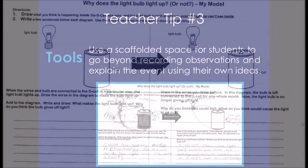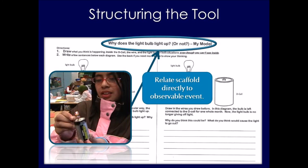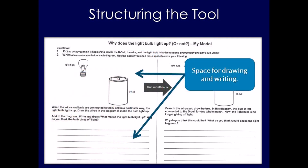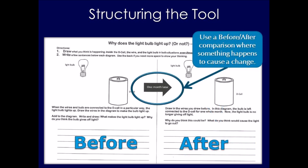Let's briefly unpack the important parts of this writing scaffold. First, it directly relates to an observable activity students were engaged with. Next, there is space for both drawing and writing—lines cue students that writing is expected. Partially started drawings allow students to spend time thinking and writing rather than laboring over drawing the perfect light bulb. Finally, setting up a before-and-after scenario gives students a contrast and cause-and-effect relationship to consider: a working flashlight before being left on, and after 30 days it no longer functions—what caused the change and how did it happen?